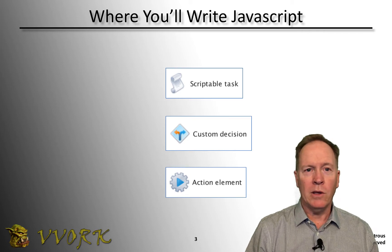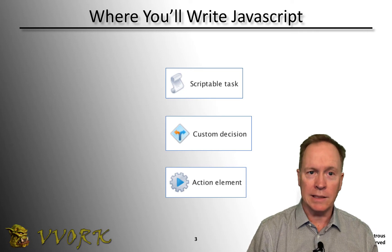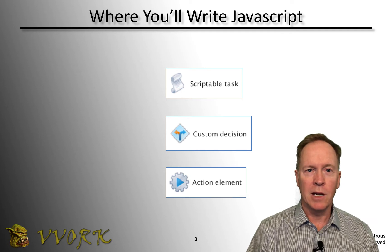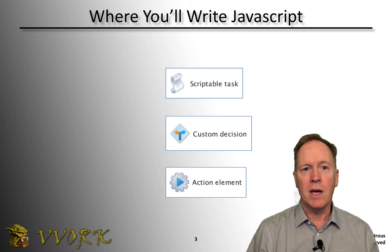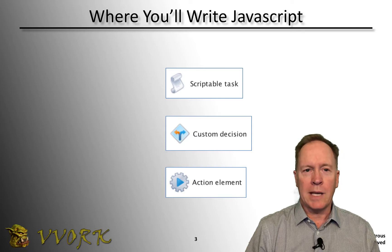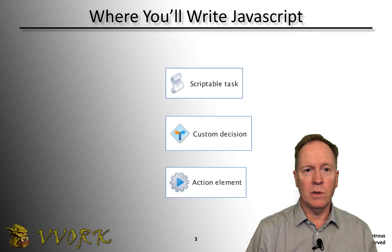The other place where you will see JavaScript code necessary sometimes is in things called actions. Actions we did talk about earlier in this video series, and we're going to get a closer look at them in the next few videos. So scriptable tasks, custom decisions, and actions are three places where you will use JavaScript coding.